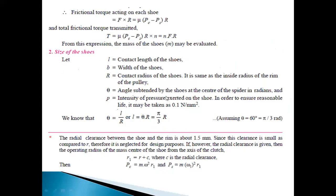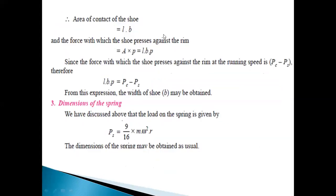From the net outward force we derive the friction force and friction torque transmitted. For the size of the shoe: L is the contact length, B is the width, and the contact radius equals the inside radius of the rim. The angle subtended by the shoe at the center of the spider is in radians, and P is the intensity of pressure exerted on the shoe. The radial clearance between the shoe and rim is about 1.5 mm, which is small compared to the arc and is neglected in the design process. If radial clearance is given, it affects the operating radius of the center of the shoe.